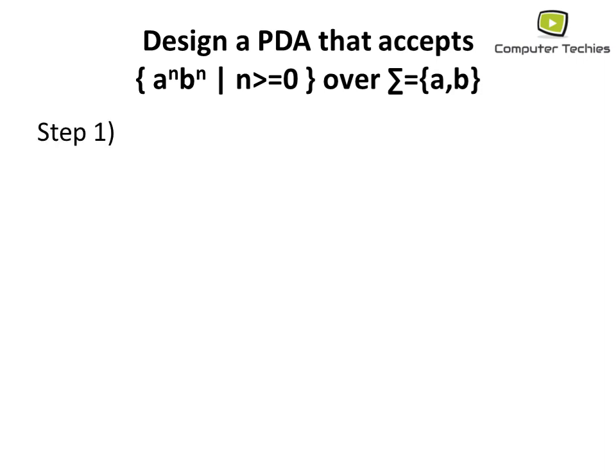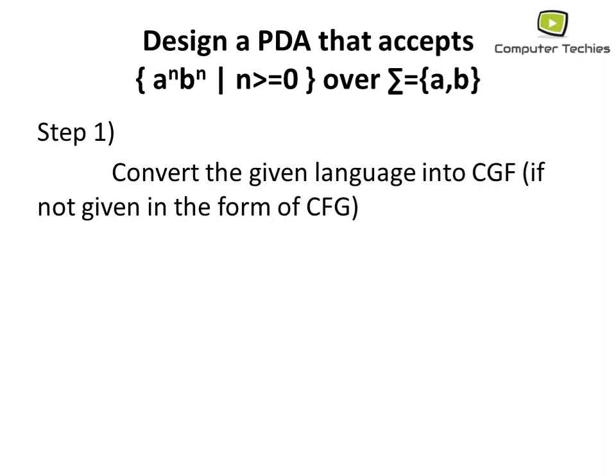Let's start with step one. First, since the language is not given in context free grammar form, we have to convert it into CFG. We will write the language accepted: a^n b^n. Putting n=0 gives epsilon as a string; n=1 gives 'ab'; n=2 gives 'aabb', and so on infinitely.